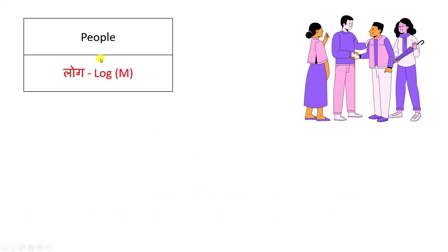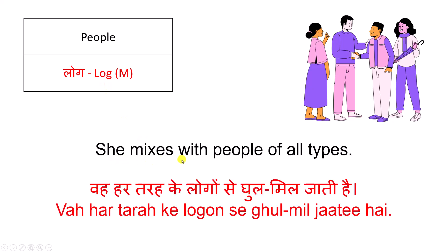People — लोग। She mixes with people of all types. वह हर तरह के लोगों से घुल मिल जाती है। लोग — People.